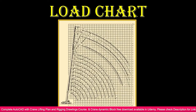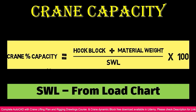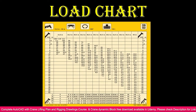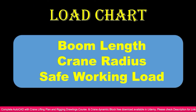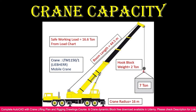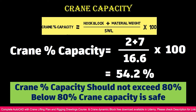Using boom length 44.5 meters and crane radius 16 meters, matching them on the load chart gives a safe working load of 16.66 tonnes. The load weight is 710 kg and hook block weight is 210 kg. Using the crane LTM 1500, the calculation is: (2 + 7) divided by 16.6, multiplied by 100, giving 54.2% crane capacity.